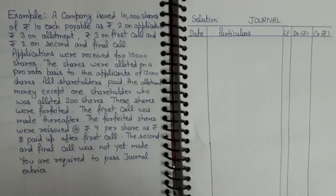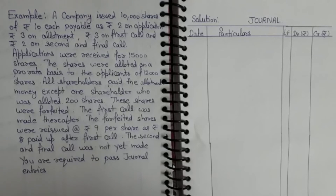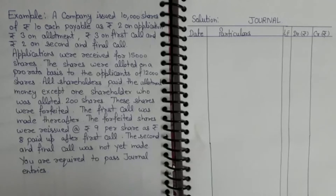In today's video we discuss about oversubscription of shares. When you have an oversubscription case and an issue at forfeiture, and if you have not given a call amount, then when you have a forfeit, how do you pass entries? In this example we have an issue at par case. A company issued 10,000 shares of ₹10 each, payable as ₹2 on application, ₹3 on allotment, ₹3 on first call, and ₹2 on second and final call. Applications were received for 15,000 shares.